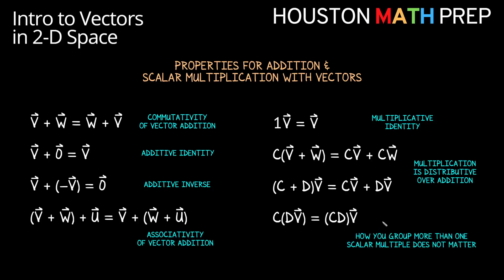And the last one here is the multiplication version of the one on the bottom over here. This is saying that how we group multiple instances in a row of scalar multiplication makes no difference. Remember the grouping making no difference here we call associativity. And so this final item just tells us that scalar multiplication is associative.